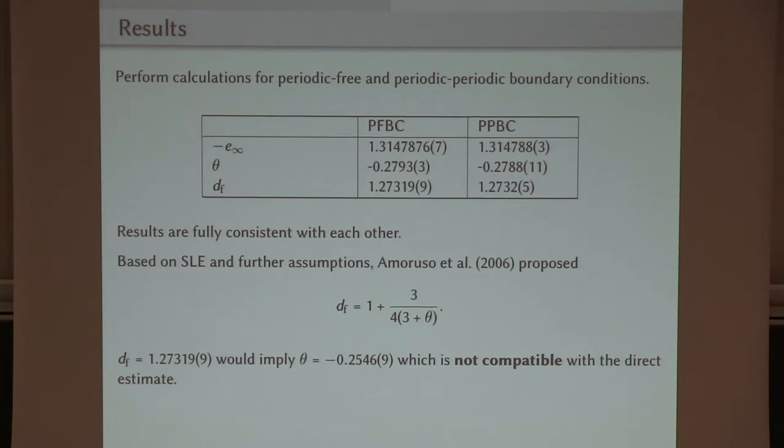Then you can look at the Kac's table for the central charge, assuming that it's a conformal minimal model. And that gives you that relation, which looked to be satisfied with the precision that was available at the time. But if you look at these higher precision results, those are not compatible. There's like a 20 sigma deviation between them.